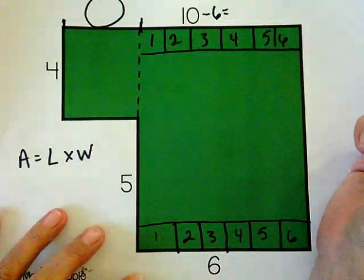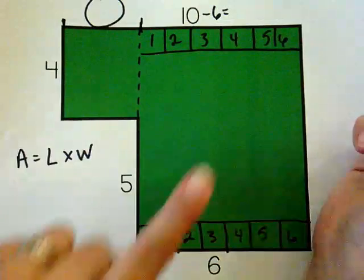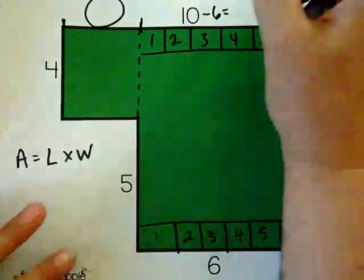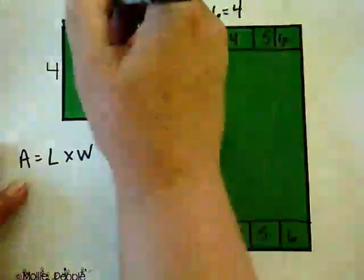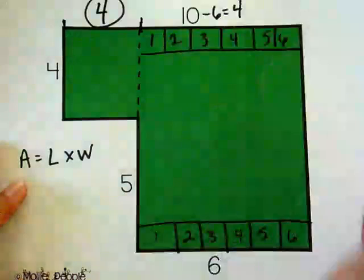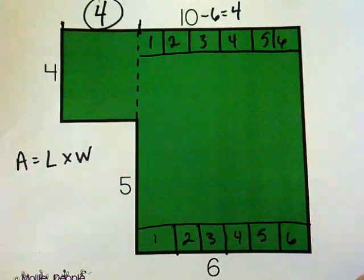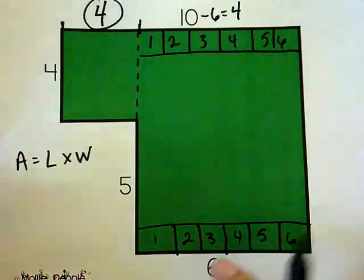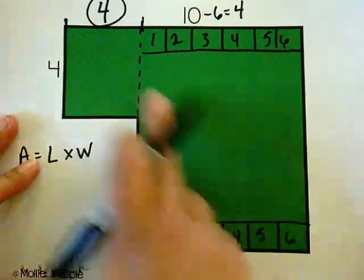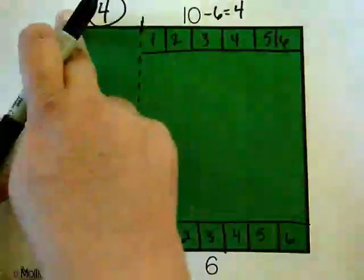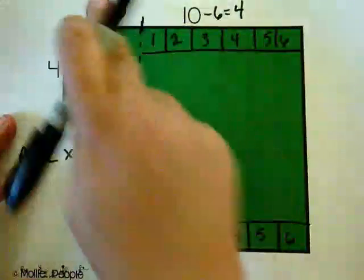So what's 10 minus six? Well six, seven, eight, nine, ten. Ten minus six is four. So the length of this one is four units. All right everybody with me so far? I subtracted my length from the length of this big long side to get this short one.